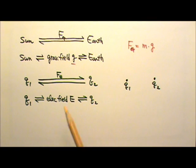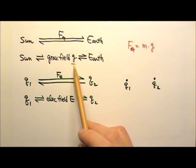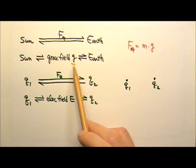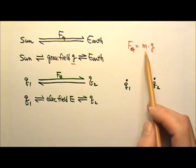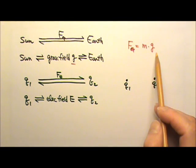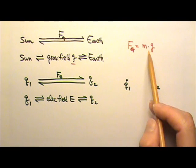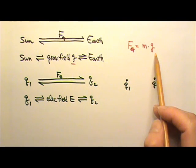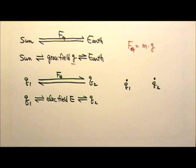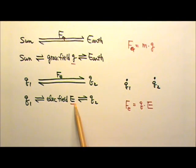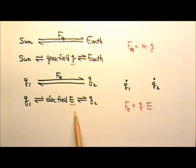By the way, the gravitational field happens to be the gravitational acceleration, G, because the gravitational force equals to mass times the gravitational acceleration. When we put a mass M in the field G, there is a force M times G. And we use capital E for electric field. The electric force on a charge Q placed in an electric field E is Q times E. By the way, the concept of electric field was introduced by Michael Faraday.